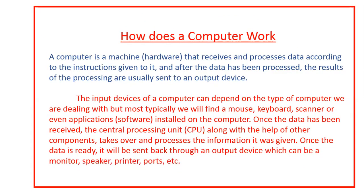Now I am going to tell you how a computer works, or the entire function of a computer. First I want to define a computer: a computer is a machine that receives and processes data according to the instructions given to it. After the data has been processed, the results are usually sent to an output device. The input devices can depend on the type of computer, but most commonly we will find a mouse, keyboard, scanner, or even applications installed on the computer.